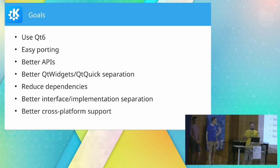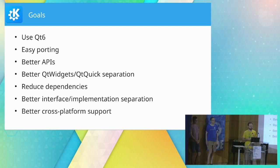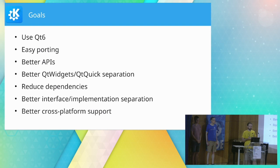So what were the goals we had in mind for KF6? The obvious one is we want to use Qt 6 — that's the baseline requirement. But we wanted to do more. Perhaps the most important goal was that porting should be as easy as possible. That was a goal for Qt in the Qt 6 transition and we wanted the same: no complicated, needless breakage; breakage should be as obvious as possible and as obvious to fix as possible. Then of course we want better APIs — easier to use correctly, clearer, with a clear purpose, not duplicated, and not better served by Qt or the C++ standard library.